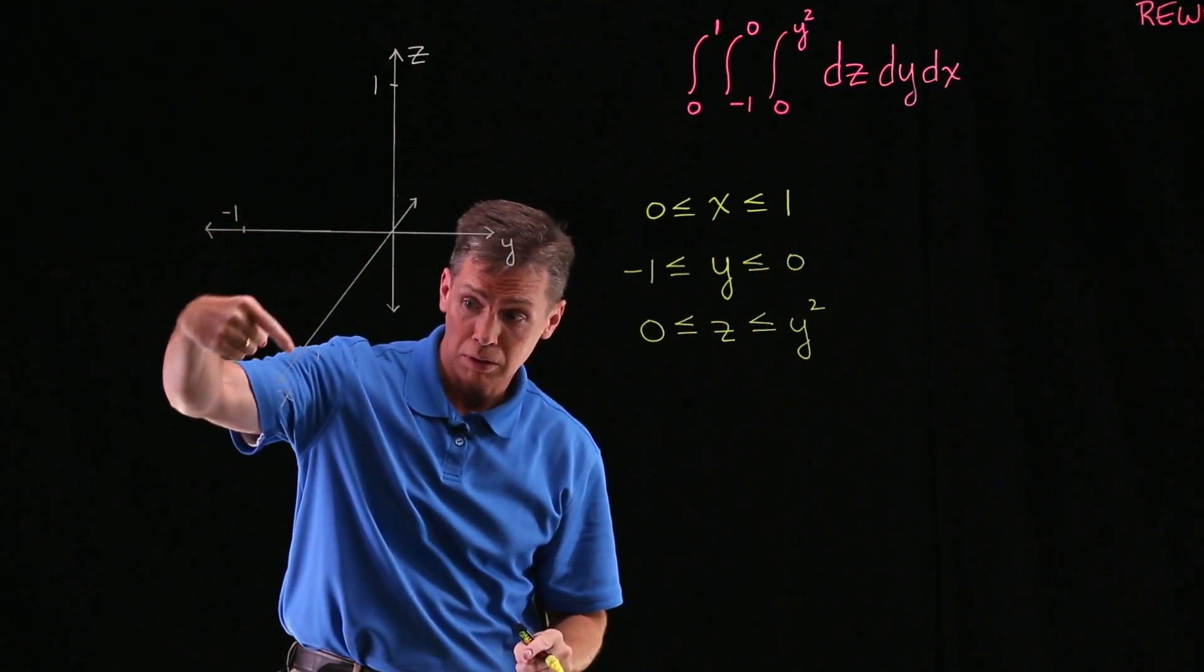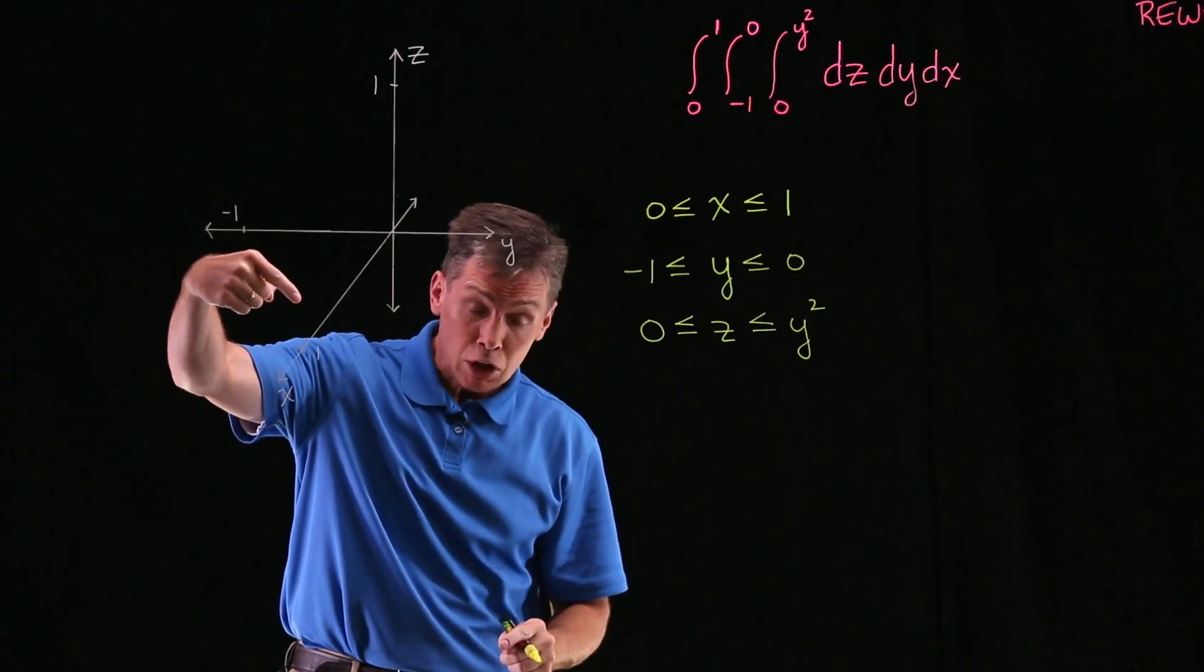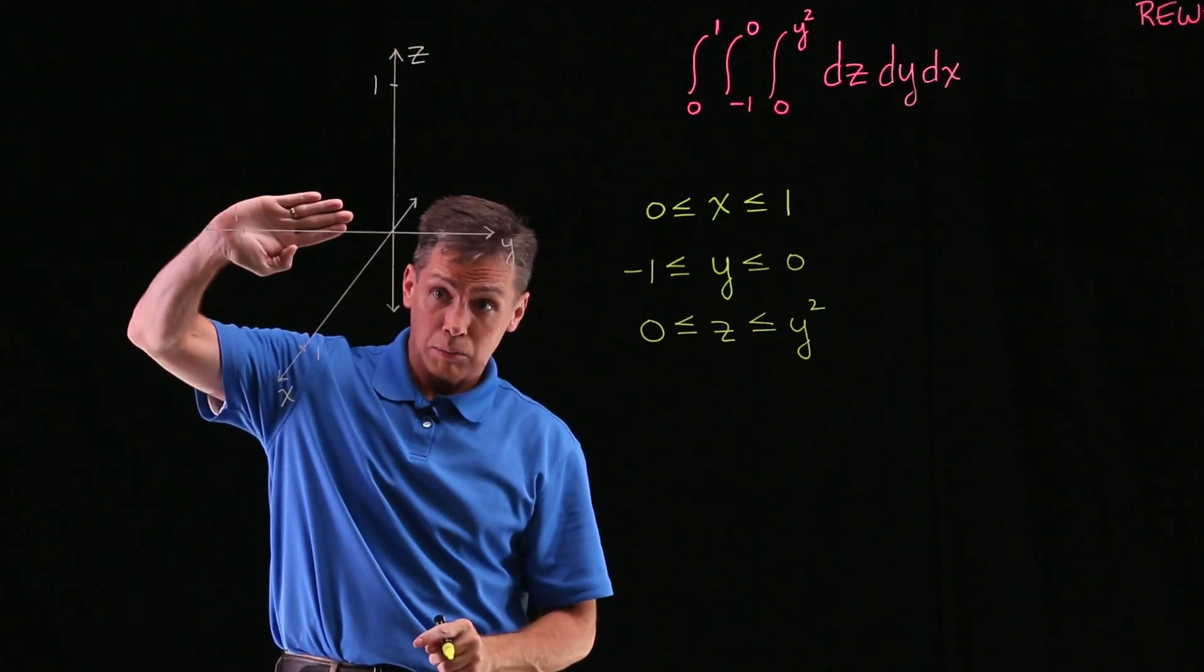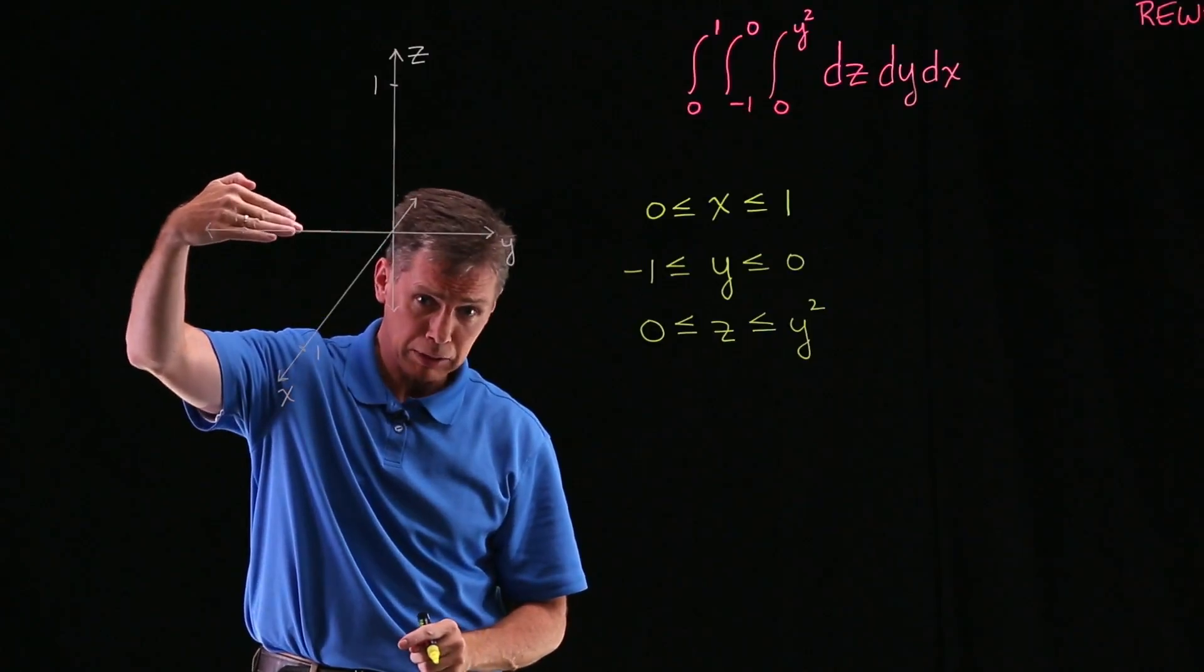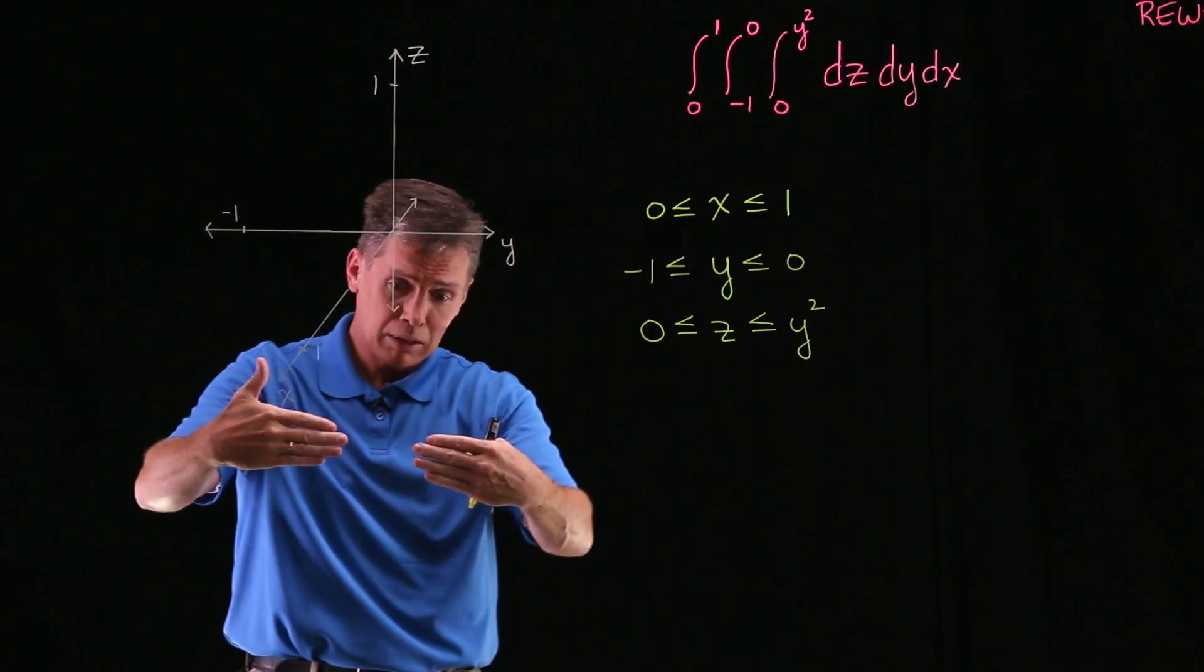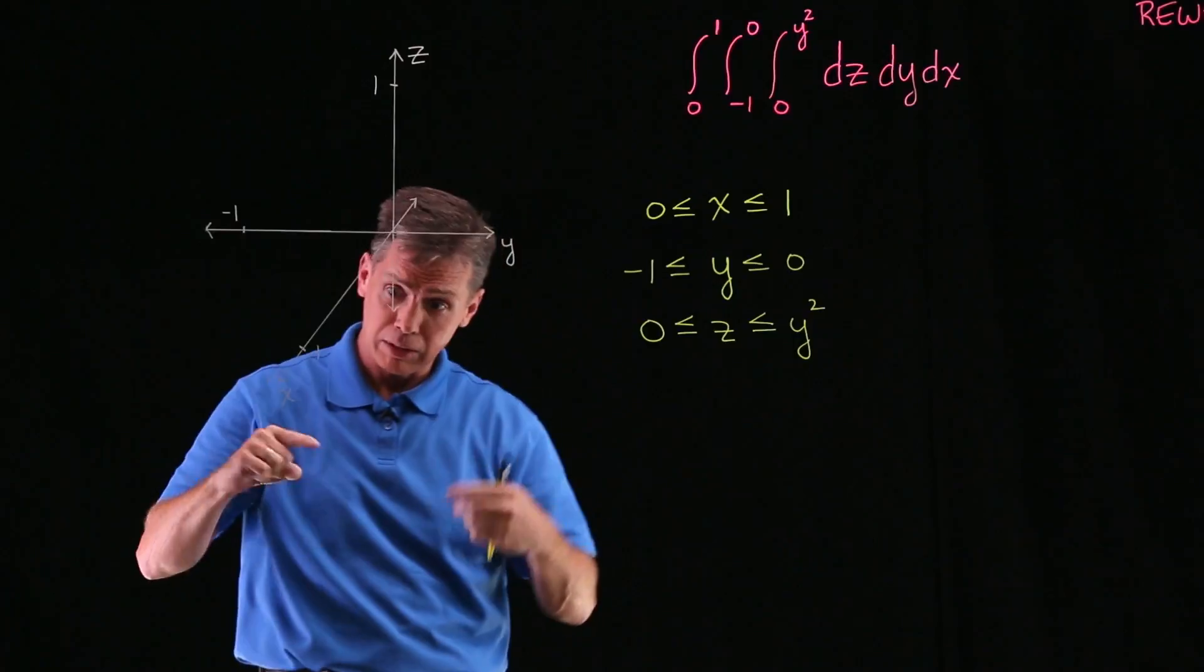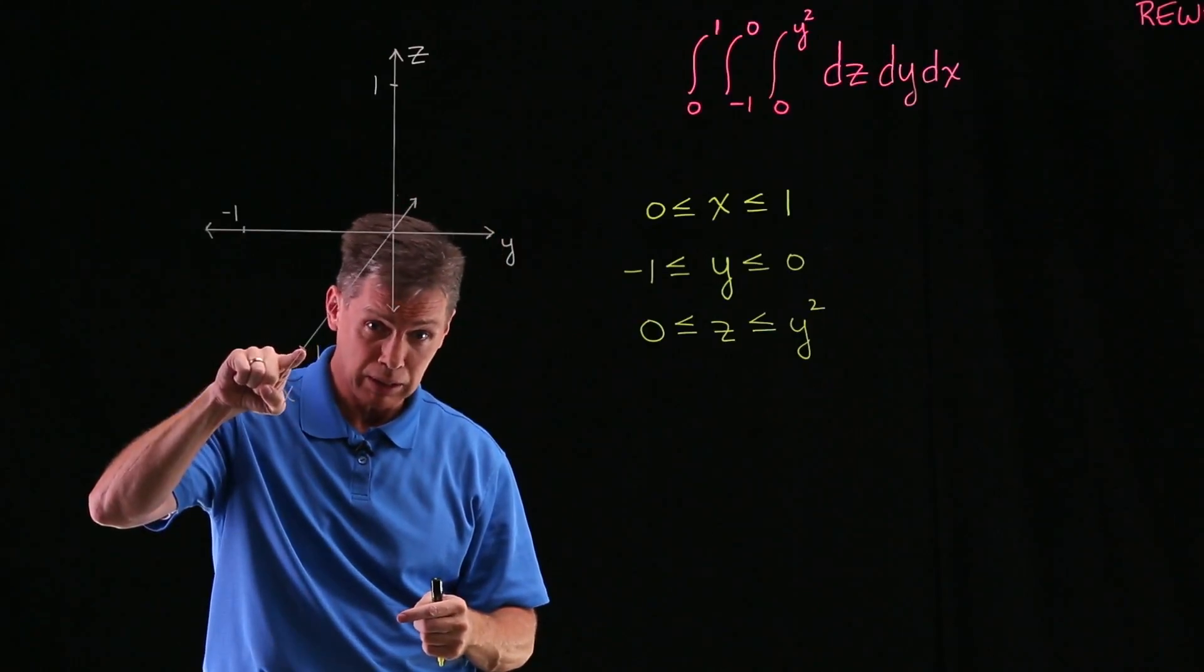On my x-axis here, this would be the positive direction. You're not going to have anything beyond the board, because that's where my 0 would be for x. And you're not going to have anything on this side of the axes beyond the 1 on the x-axis.